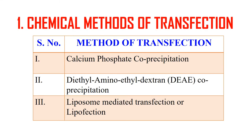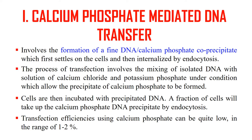First, chemical method of transfection. Chemical methods generally include calcium phosphate co-precipitation, diethyl-aminoethyl-dextran co-precipitation, and liposome-mediated transfection also known as lipofection. Calcium phosphate mediated DNA transfer involves the formation of a fine DNA-calcium phosphate co-precipitate which first settles on the cells and then is internalized by endocytosis. This method involves mixing isolated DNA with a solution of calcium chloride and potassium phosphate under conditions that allow the formation of calcium phosphate precipitates.